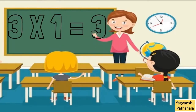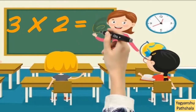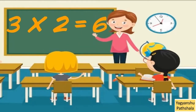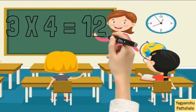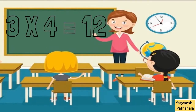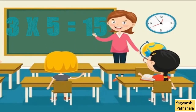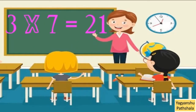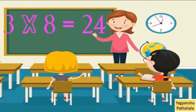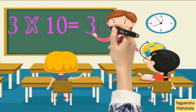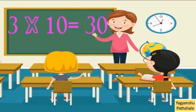3 into 1 is 3. 3 into 2 is 6. 3 into 3 is 9. 3 into 4 is 12. 3 into 5 is 15. 3 into 6 is 18. 3 into 7 is 21. 3 into 8 is 24. 3 into 9 is 27. 3 into 10 is 30.